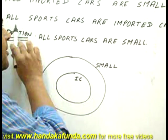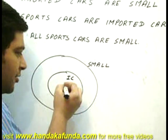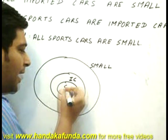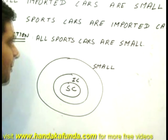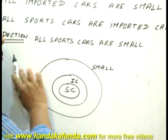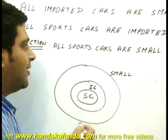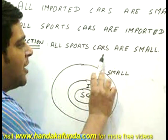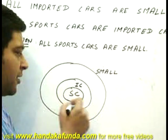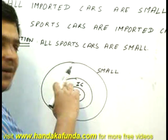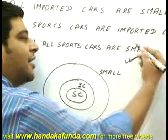My minor premise is all sport cars are imported cars, so that means the set for sports cars will be inside the imported car set. Now I have to figure out whether my deduction is a valid or an invalid one. My deduction is all sport cars are small, so my sports car set is inside this small set. That means this is a valid deduction.